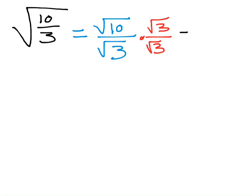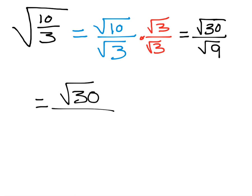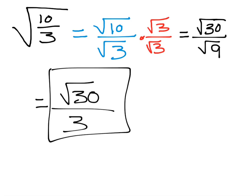Let's simplify the top part: square root of 10 times square root of 3 is going to be square root of 30 — you just multiply what's underneath. And the square root of 3 times the square root of 3 is going to be the square root of 9, because 9 is a perfect square, which becomes just 3. And now I have the square root gone in the denominator. This is called rationalizing the denominator. Whenever you have a square root in the denominator, you multiply by the denominator over itself, giving you a perfect square which gets rid of the square root. This would be the simplified answer to the square root of 10 thirds.